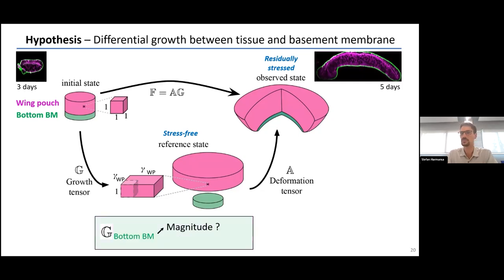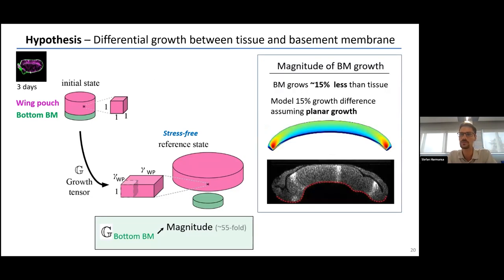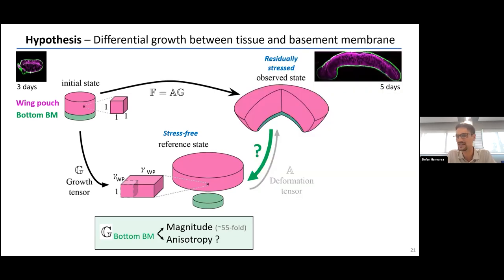Next, we checked the magnitude of basement membrane growth. We found the basement membrane grows about 15% less than the tissue — not a striking difference. When we feed this into our model assuming planar growth for both layers, we end up with something like a banana structure that looks quite different from an actual wing disc. So we were missing something, and as you can guess, this is most likely the anisotropy of basement membrane growth.